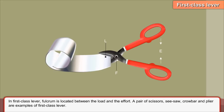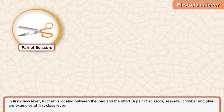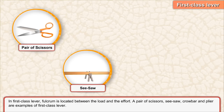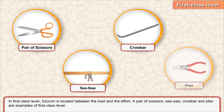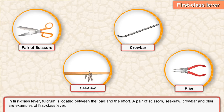First class lever. In a first class lever, the fulcrum is located between the load and the effort. A pair of scissors, see-saw, crowbar, and plier are examples of first class lever.